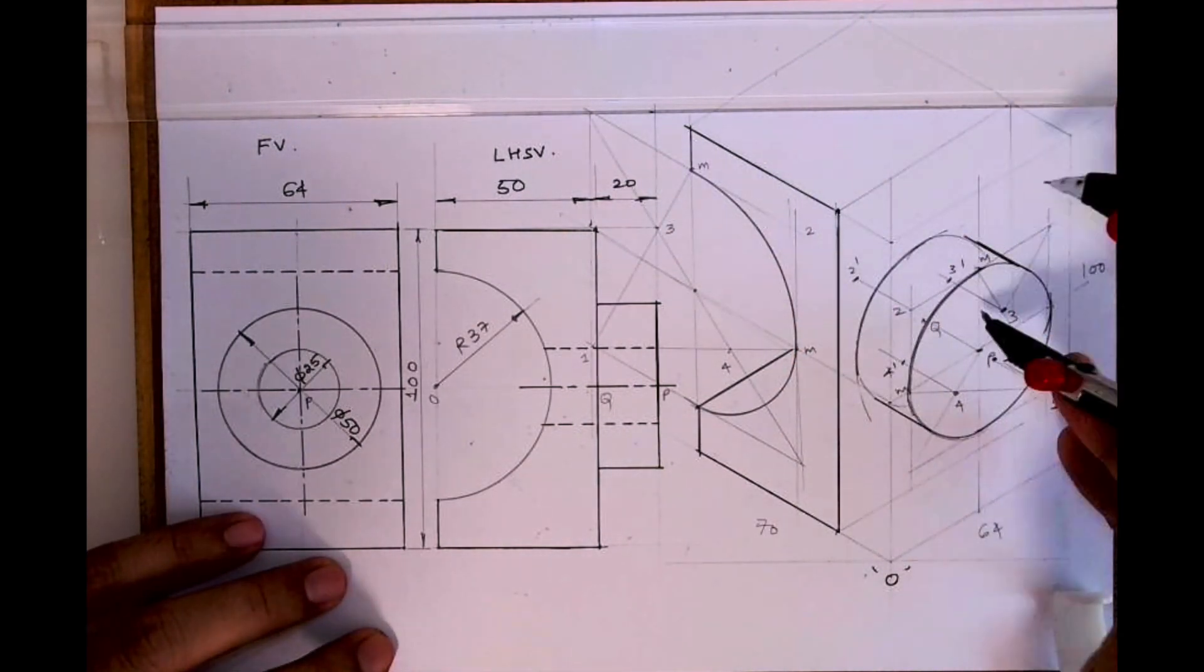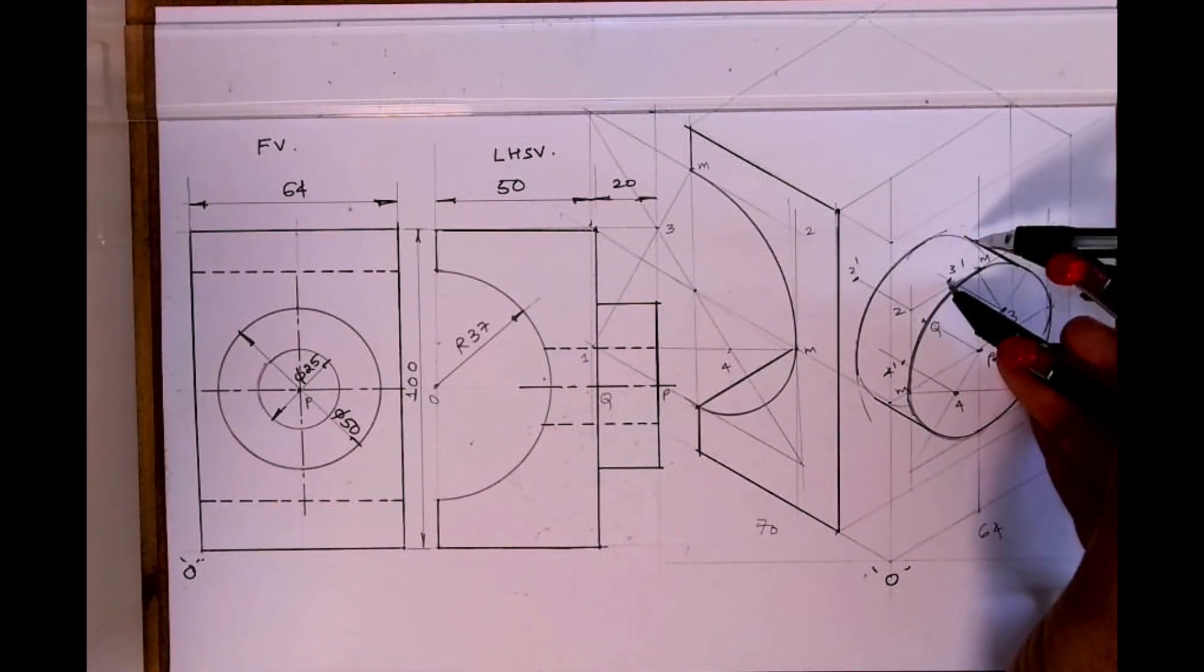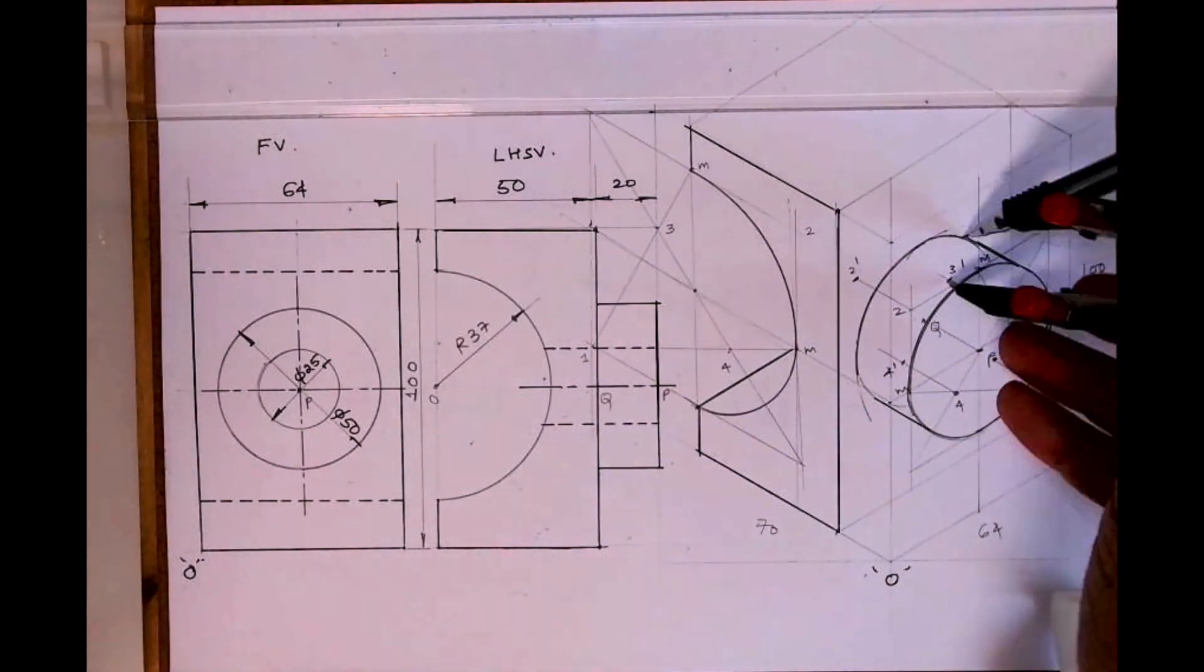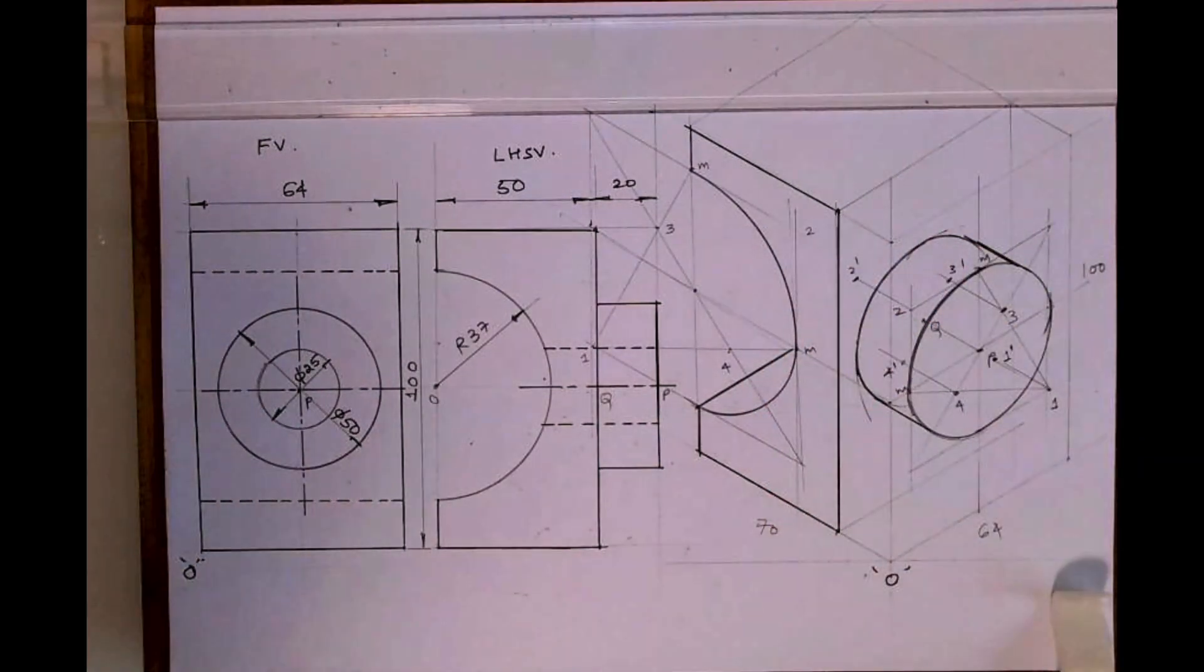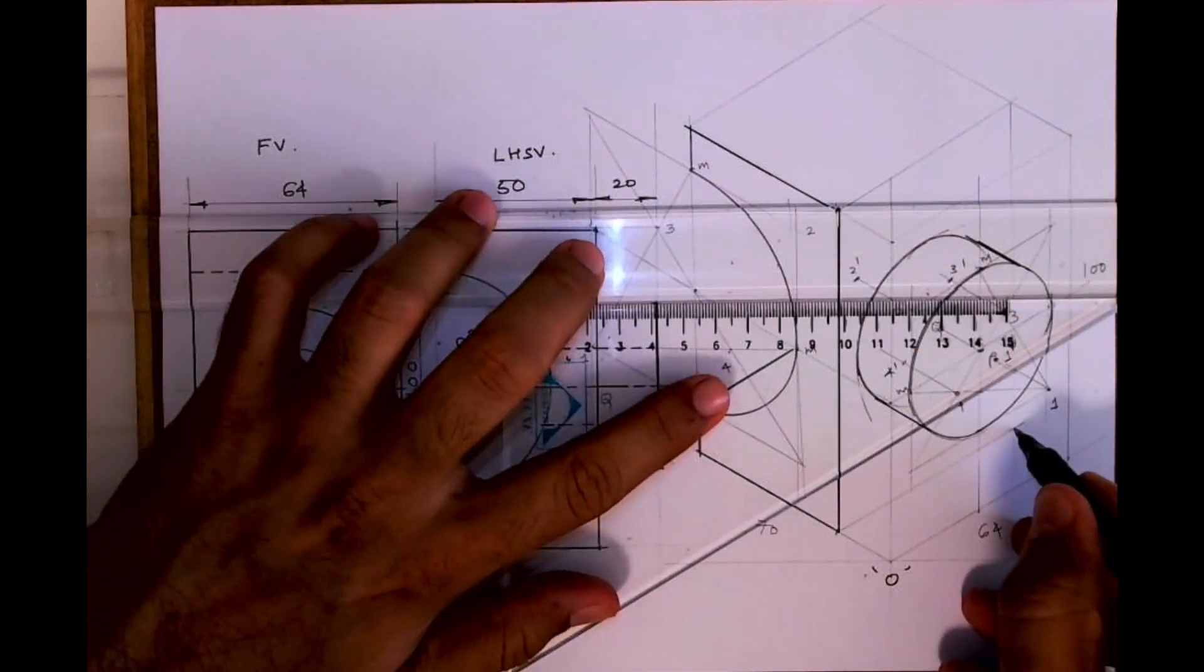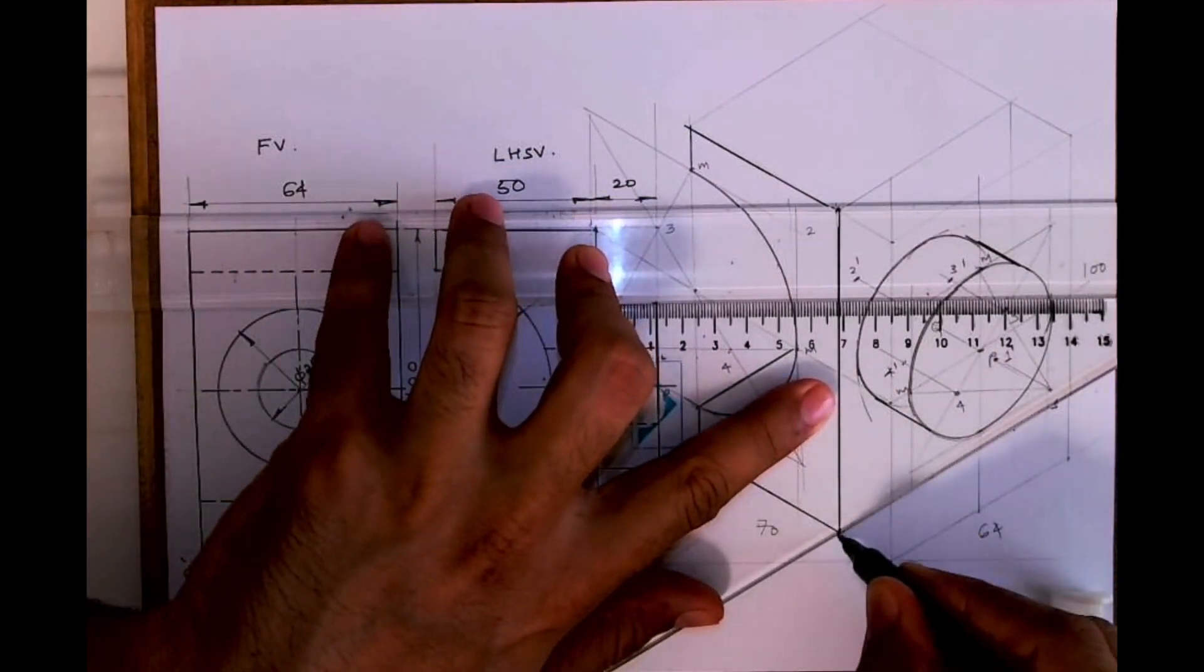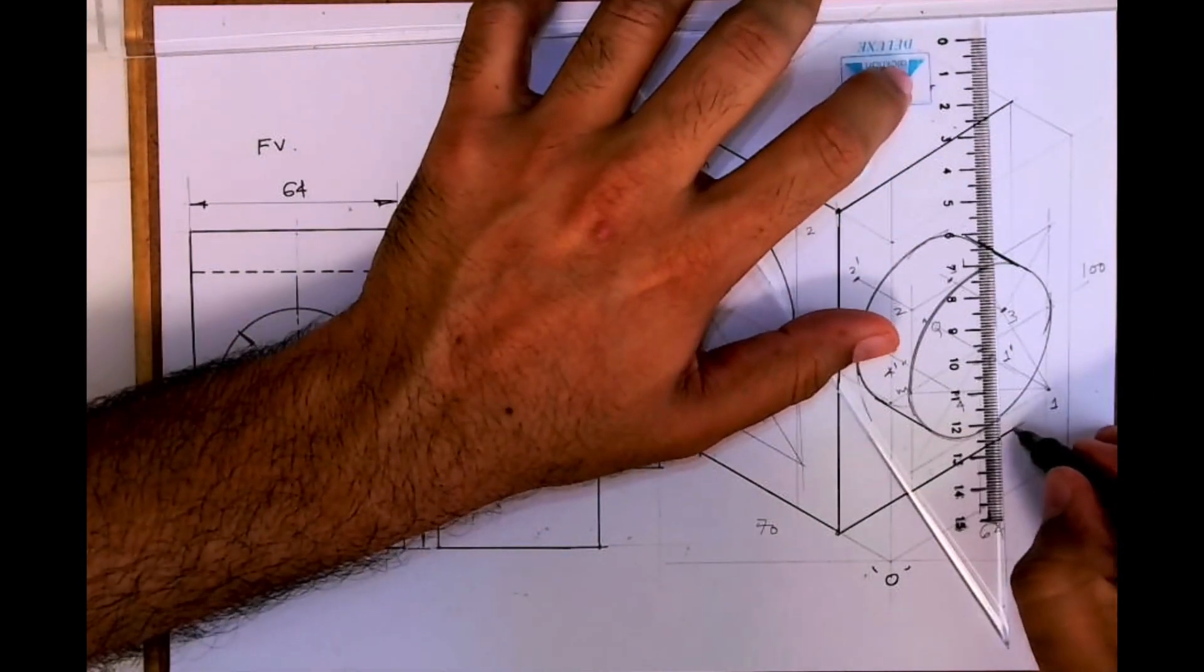So we are done with the behind part. Now what we need to do is draw the middle circle, that is diameter 25. That is also the same way - from the center point you take 12.5, 12.5. See this. This will be dark, now I know this much portion will be dark so I can do that much.